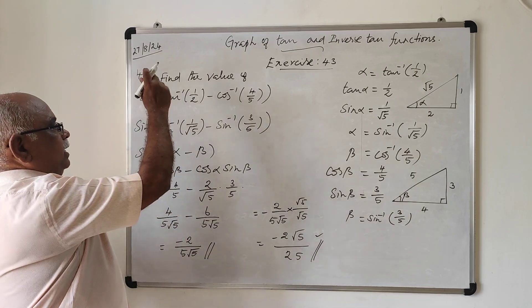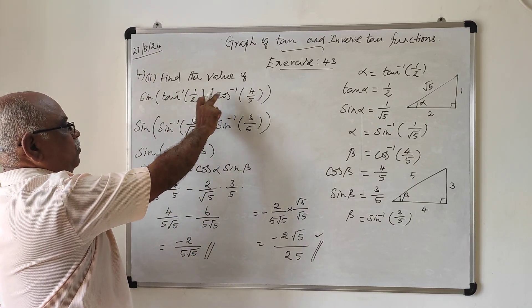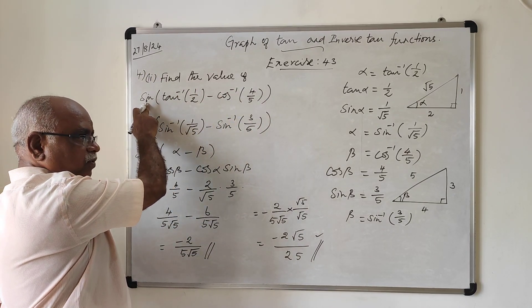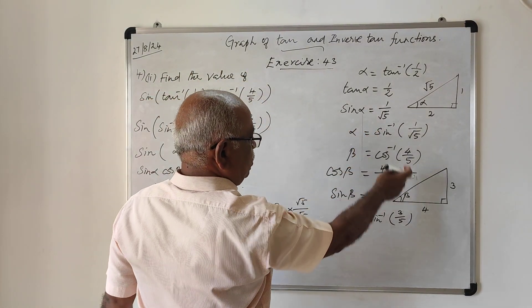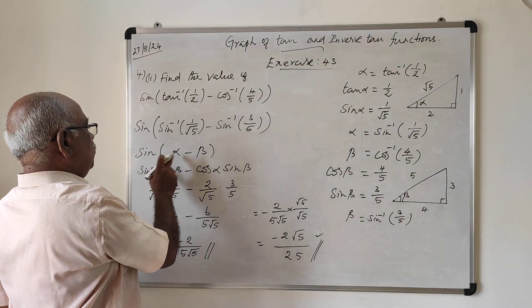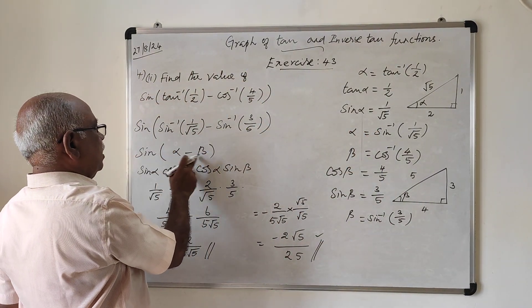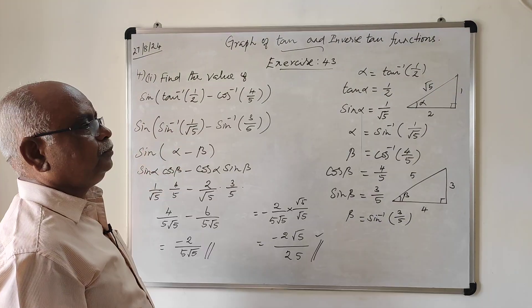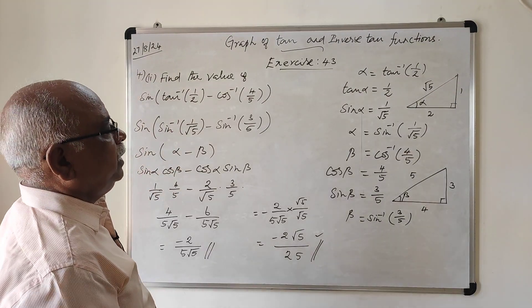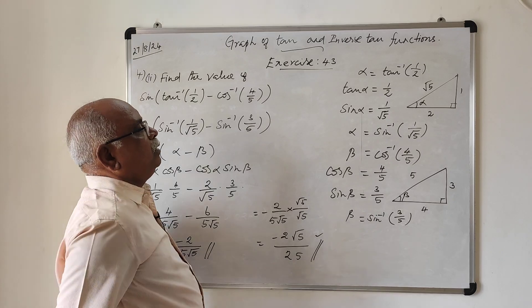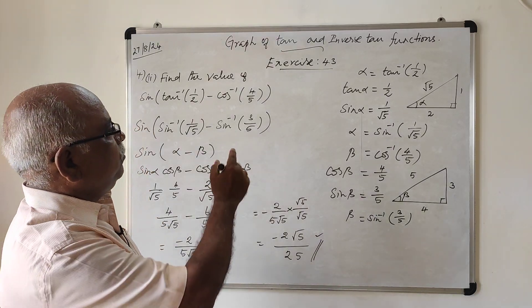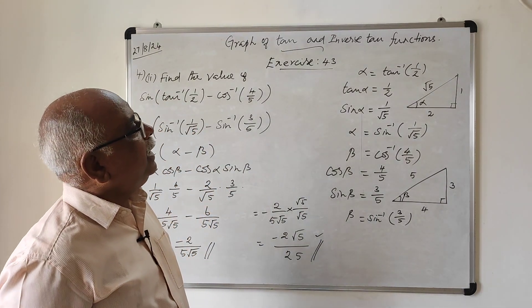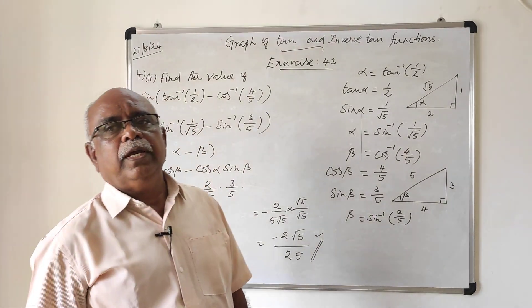So the tan and cos inverse functions were converted into sine inverse using the right-angle triangle method. Then the formula for sin(α - β) was applied to derive the answer. I complete my video now and we will continue the remaining topics in the next video. Thank you.